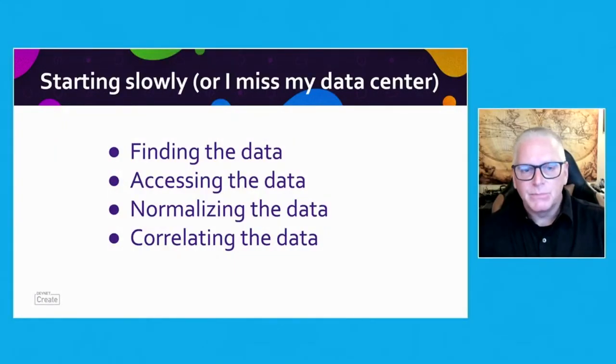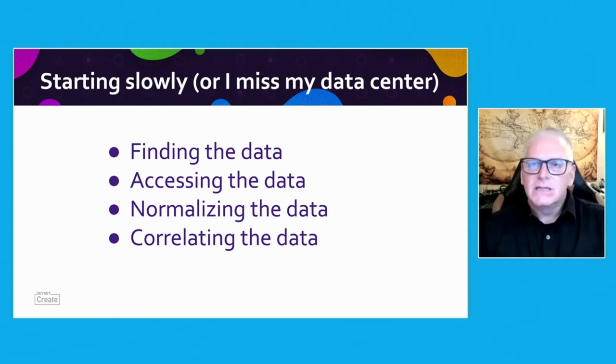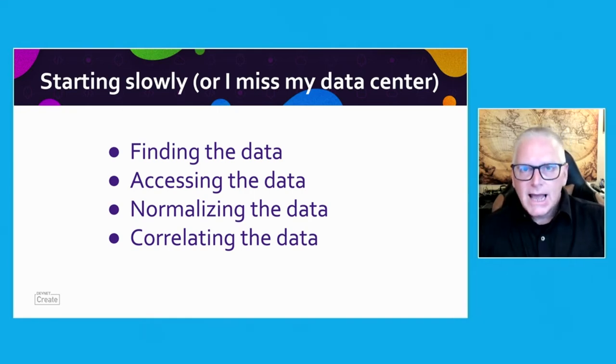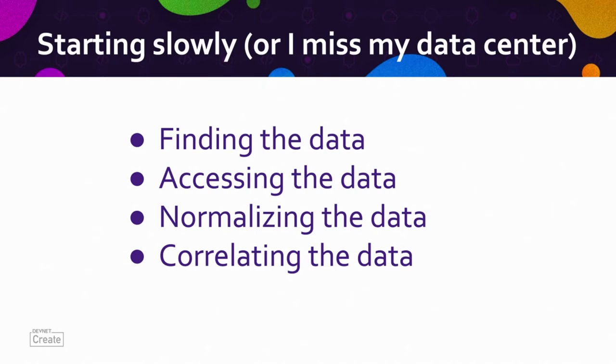Then we get into normalizing this. Not everybody does it the same way — a name's not always a name. A field might have first name, last name, surnames. Everybody likes to do it a little differently. So we go through the process of normalizing and then correlating. Previously you could just grab the log files and be good to go. But now I've got to see who's logging into X, Y, Z and be able to correlate that. Some use IDs like email — that makes it a little easier — but not everybody uses email, so we have to put a correlation engine together. And if you can see from this, it's still all just data.